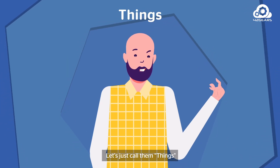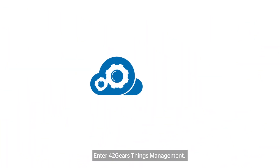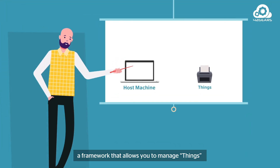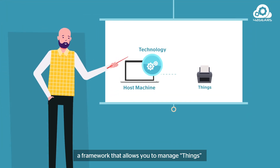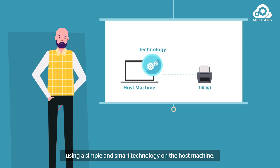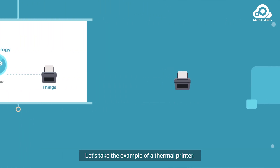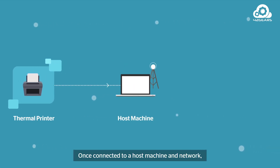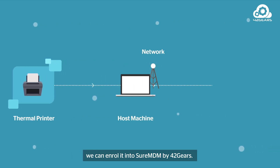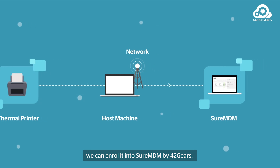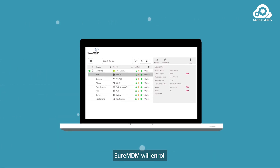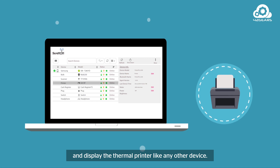Let's just call them "things." Enter 42Gears Things Management — a framework that allows you to manage things using simple and smart technology on the host machine. Let's take the example of a thermal printer. Once connected to a host machine and network, we can enroll it into SureMDM by 42Gears.